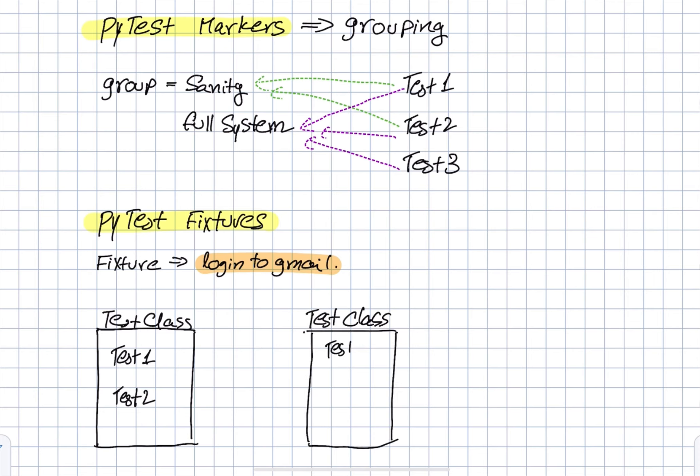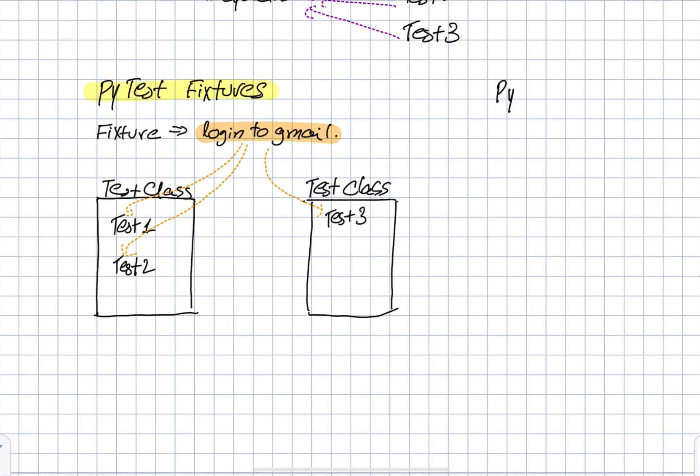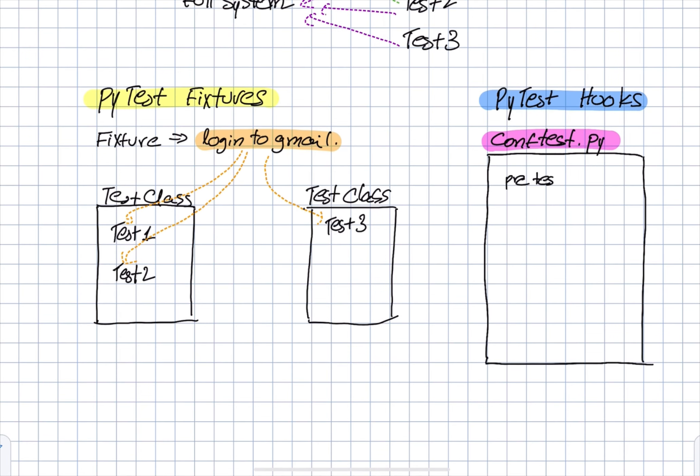We can also integrate fixtures in several classes. It will be defined only in one class, but we can apply it to more. The last advantage of using PyTest that we'll discuss here today is the usage of hooks. Hooks are special functions that we can define in conf tests. They are being automatically called prior or post to our test, and sometimes even during the test.